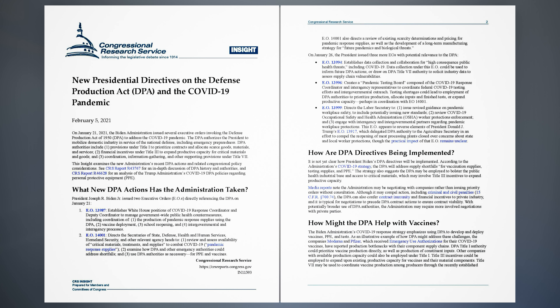EO 13,999 directs the Labor Secretary to: 1. Issue revised guidance on pandemic workplace safety, to include potentially issuing new standards; 2. Review COVID-19 occupational safety and health administration (OSHA) worker protections enforcement; and 3. Engage with interagency and intergovernmental partners regarding pandemic workplace protections. This EO appears to reverse elements of President Donald J. Trump's EO 13,917, which delegated DPA authority to the Agriculture Secretary in an effort to compel the reopening of meat processing plants closed over concerns about state and local worker protections, though the practical impact of that EO remains unclear.